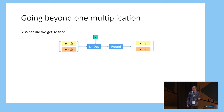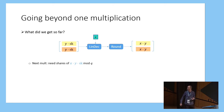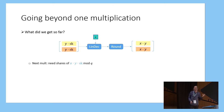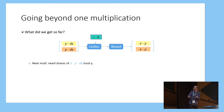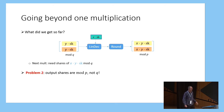Going beyond one multiplication, ideally we'd like to apply this again, and for this it seems like we need shares of x times y also times a secret key to do another multiplication. This is actually quite easy to get: we just make one small modification — instead of having an encryption of x, we have an encryption of x times by the secret key, and then this multiplication by the secret key just ends up with shares of x times y times the secret key.